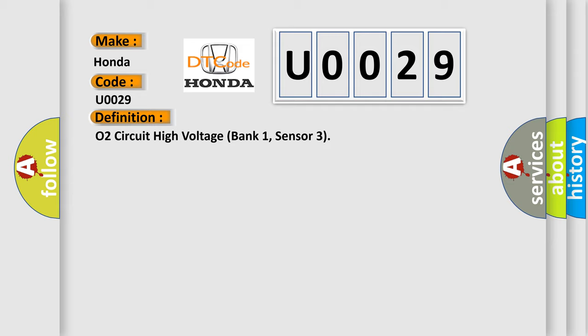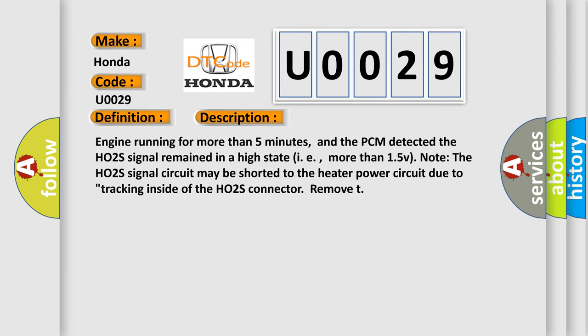And now this is a short description of this DTC code. Engine running for more than five minutes, and the PCM detected the HO2S signal remained in a high state, i.e., more than 1.5V. Note the HO2S signal circuit may be shorted to the heater power circuit due to tracking inside of the HO2S connector. Remove it.